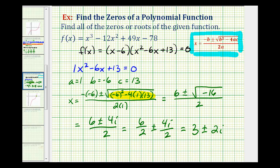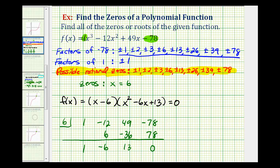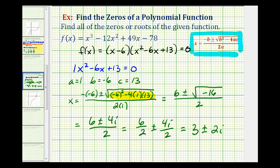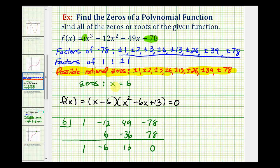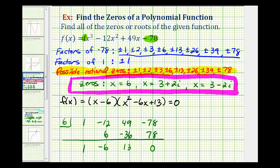Notice the two remaining zeros are complex zeros. Going back, the three zeros of the given degree three polynomial function are: x equals six, x equals three plus two i, and x equals three minus two i — which we can write as three plus or minus two i.